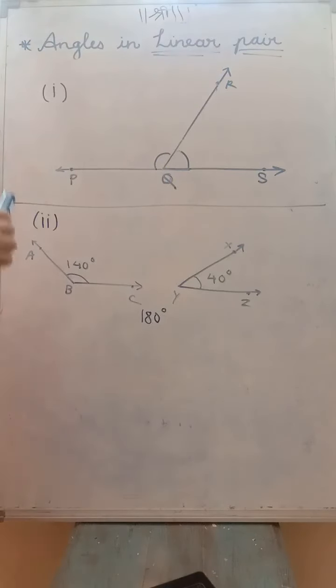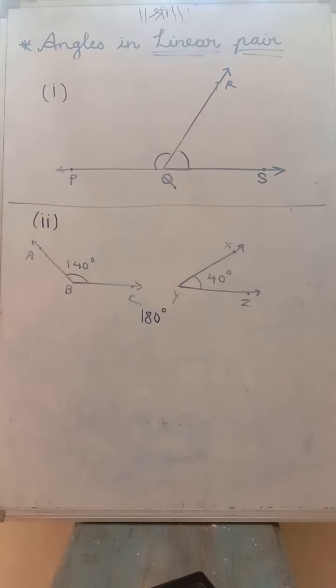So always remember children: angles in linear pair are supplementary angles, but all supplementary angles are not angles in linear pair.